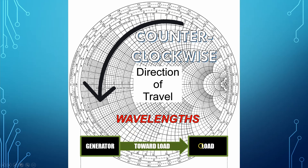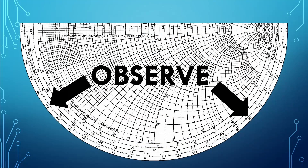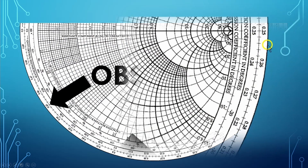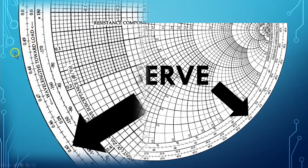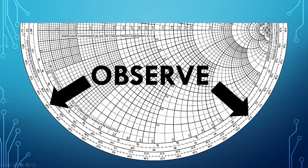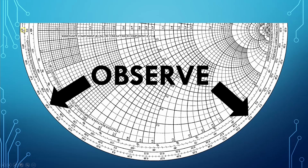You can then read right off the Smith chart what the impedance of your antenna is. Observe what we see on the outer ring: starting on the right-hand side at the equator at 0.25, progressing 0.26, 0.27, 0.28 and continuing around to 0.48, 0.49, and then all of a sudden it goes to 0. It makes sense that after 0.49 would come 0.50, but it's also 0.0, because the scale starts at 0 and goes around to 0.25. So 0.0 and 0.50 share the same spot on the Smith chart.